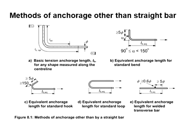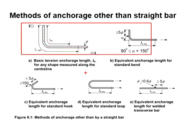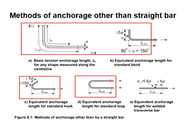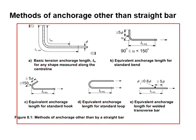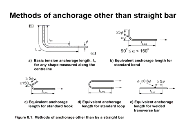The anchorage of the steel bar does not necessarily have to be a straight bar. Bent bar, hook bar, and loop bar may also be applicable. This diagram shows the typical methods of anchorage other than a straight bar.